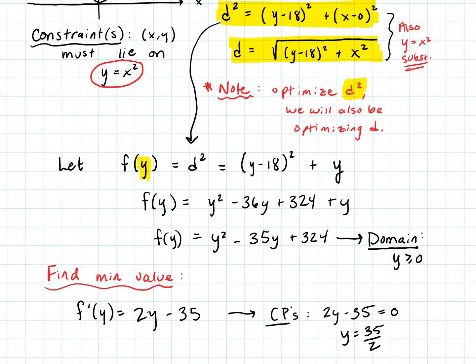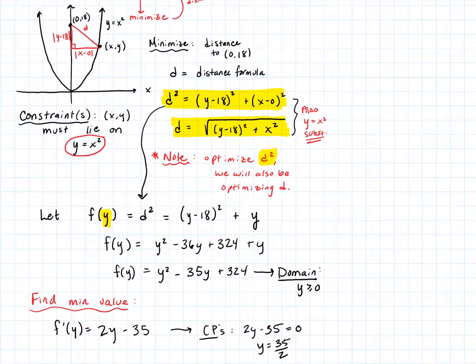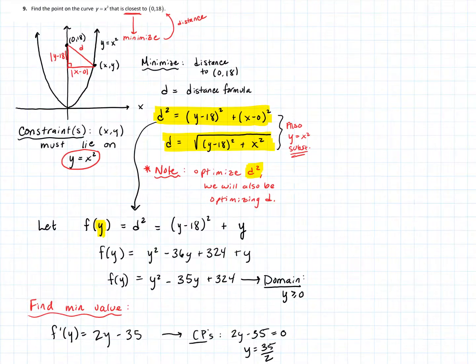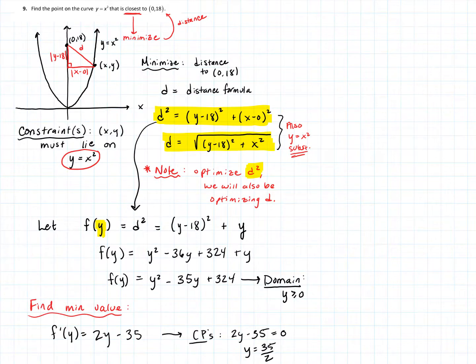I do want to mention real quickly that we could have written this as a function of x. I went for a function of y because I noticed that simple substitution. Just as easily, we could have solved for x, and we could have done it as a function of x. That is just kind of a personal choice. I think this way is a little bit simpler, but we absolutely could have done it as a function of x, too.